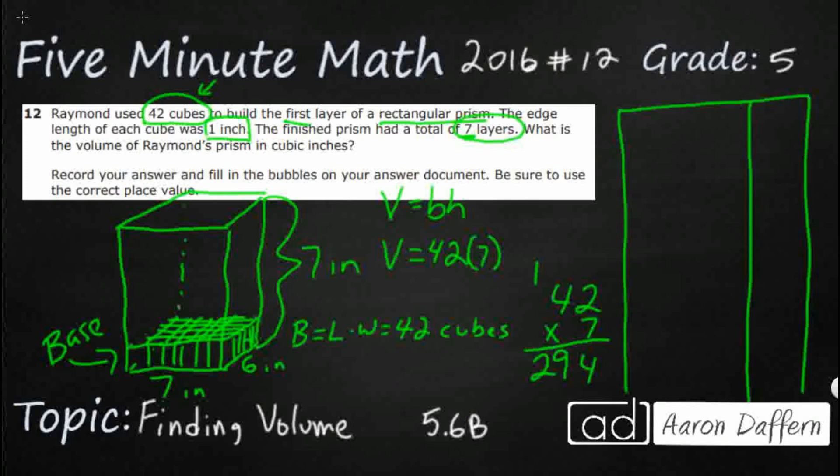Your answer document would have something that looks like this. You're going to have two digits to the right of the decimal. You're going to have three digits to the left. And the only thing we need to know is where to put this 294. Don't put it all the way to the right. This is our hundreds, our tens, our ones. We don't need any decimals. We would just put 294 and then bubble the numbers underneath.